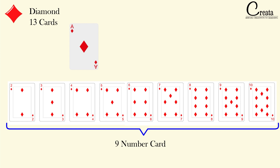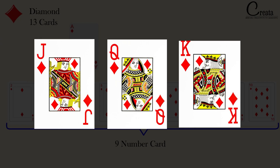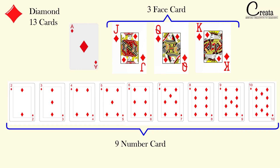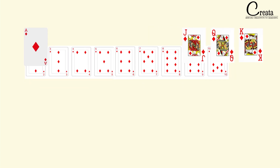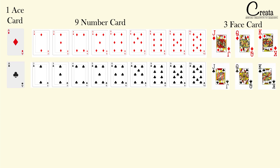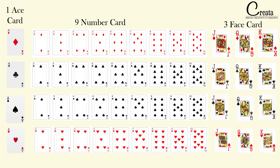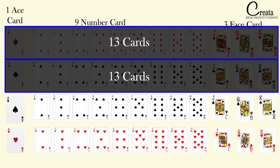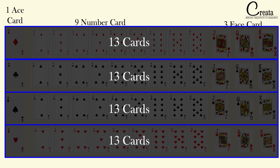Further, there are total 3 face cards which are Jack, Queen, and King. So in the set of 13 cards, there are 3 face cards, and 9 number cards, and 1 Ace card. If you add all these cards, it will form total 13 cards. This set of 13 cards will repeat in the club, and also in the spade and also in the heart. So basically, we are having a set of these 13 cards in all 4 categories, and if we add all these cards, it will end up to 52 cards.